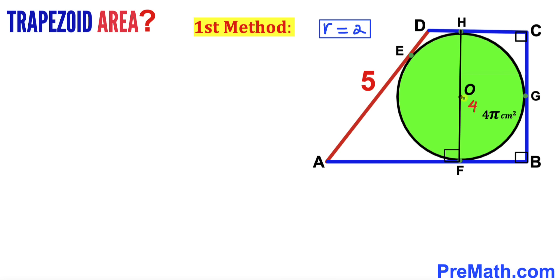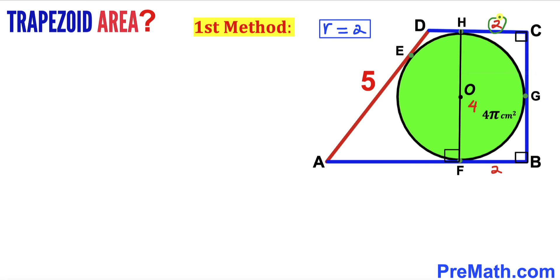Likewise, OC is also a radius of this circle, so HC equals radius r = 2 centimeters. Similarly, FB equals radius r = 2 centimeters as well.